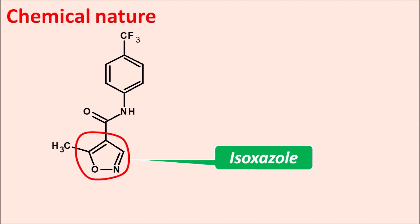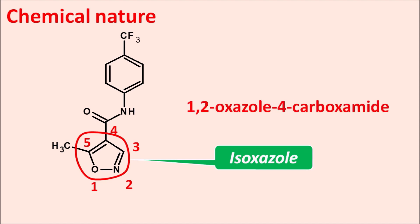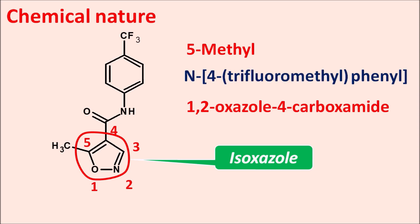Giving the numbering to isoxazole, we start from the oxygen then nitrogen — 1, 2, 3, 4, 5. This isoxazole has an amide functionality at the fourth position, so it can be written as 1,2-oxazole-4-carboxamide. At the fifth position a methyl group is present, giving 5-methyl, and on the nitrogen of the amide a phenyl group is present, giving N-phenyl. On this phenyl at the fourth position a trifluoromethyl group is present — 4-trifluoromethyl. That is the complete name of leflunomide.